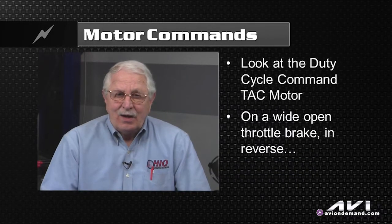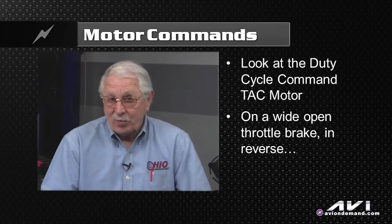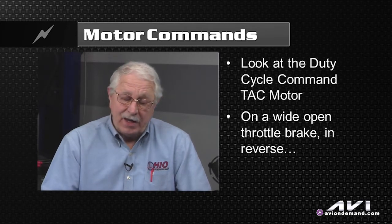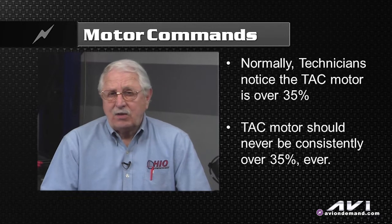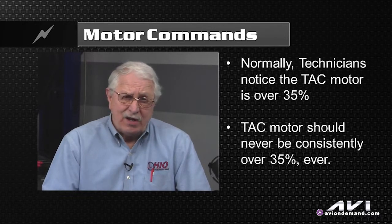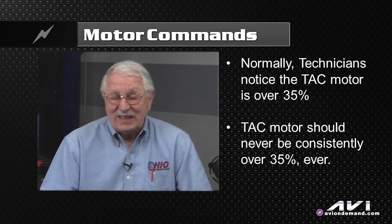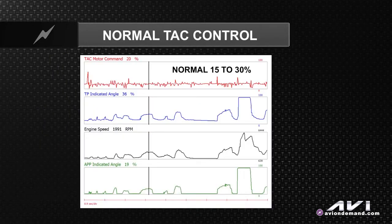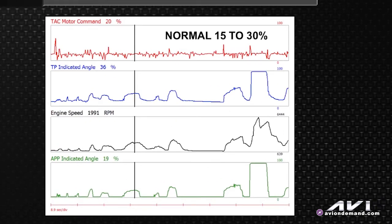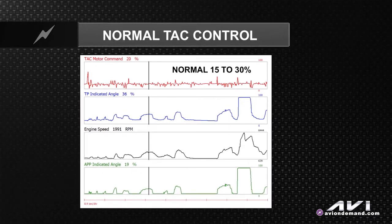What we're after with the engine running is to look at the duty cycle command attack motor. Normally, what you will see on a wide open throttle power brake, with the parking brake on, your foot on the brake pedal, in reverse, is the fact that the duty cycle command attack motor should never consistently stay above 35%. It might jump way up there very briefly at 90%, 95%, 99%, but it'll drop drastically to about 30% on a good attack motor.